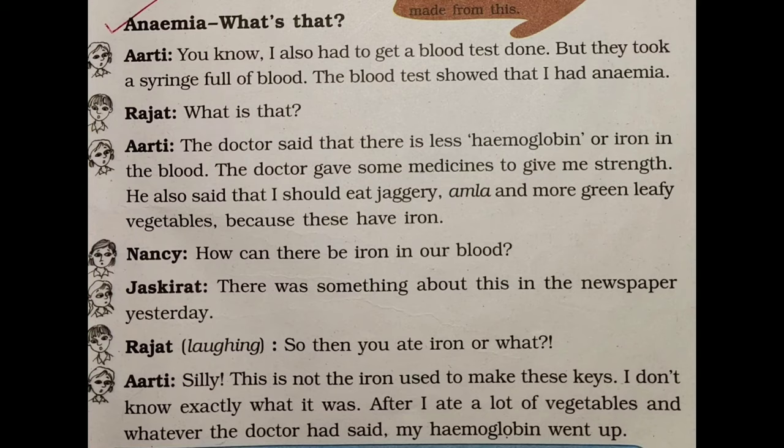When blood becomes pale red instead of deep red, that condition is known as anemia. After testing Arati's blood, they found a less amount of hemoglobin or iron in her blood — that is why they told Arati she was suffering from anemia.